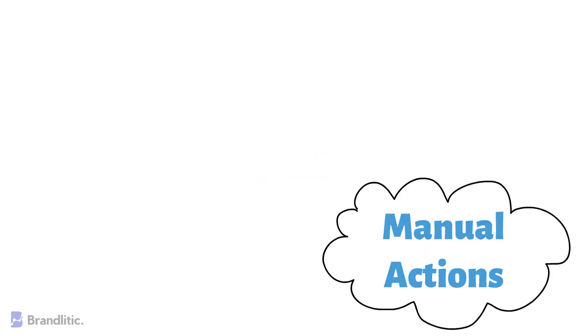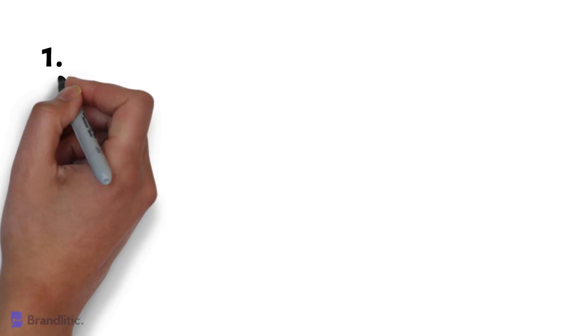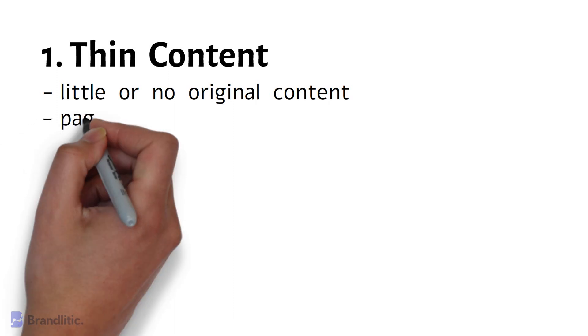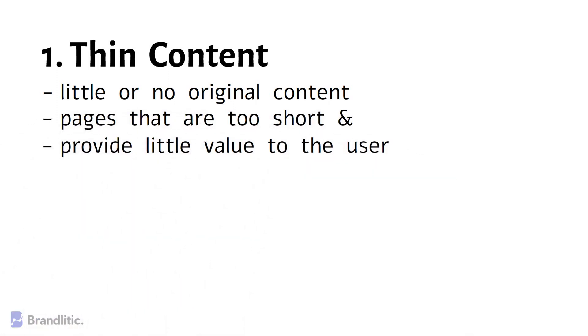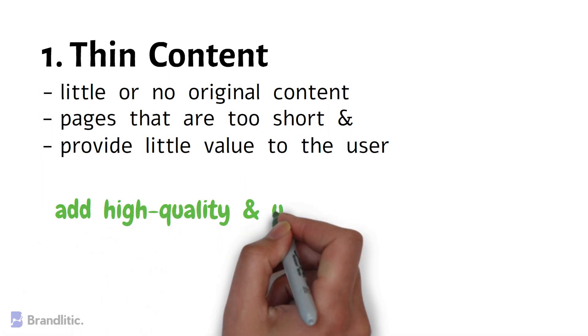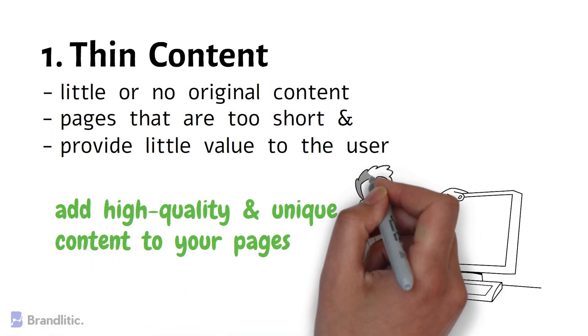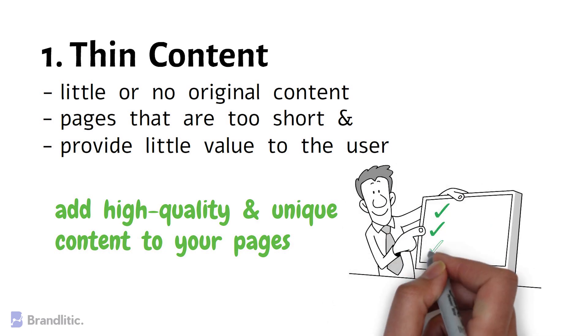Manual actions are SEO penalties that are manually applied by a human reviewer at Google. The first is Thin Content, which refers to pages with little or no original content, or pages that are too short and provide little value to the user. To fix this penalty, you need to add high-quality and unique content to your pages, ensuring that each page provides value to the user.